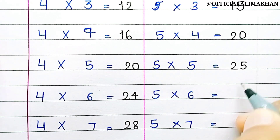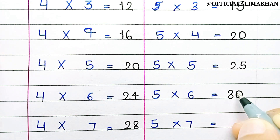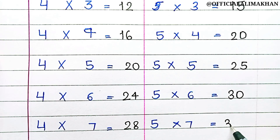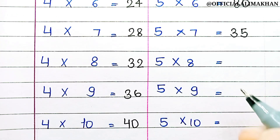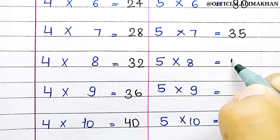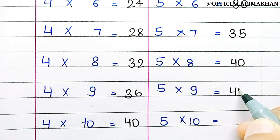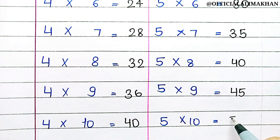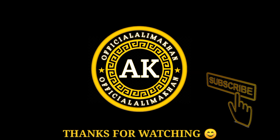5 6s are 30, 5 7s are 35, 5 8s are 40, 5 9s are 45, 5 10s are 50.